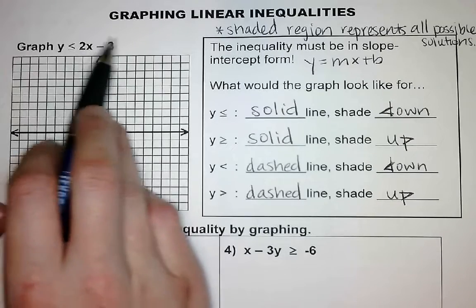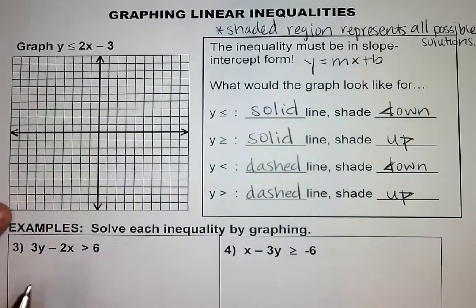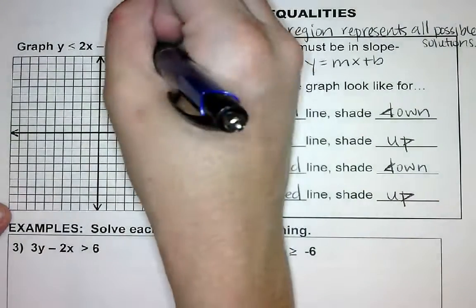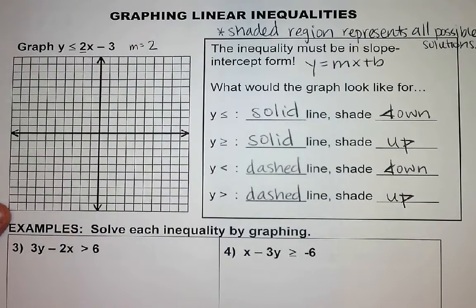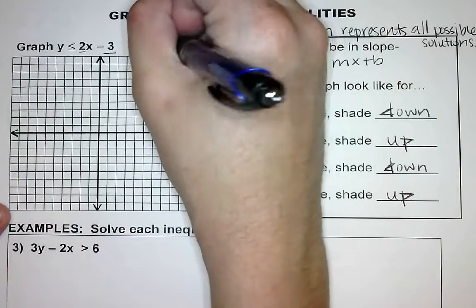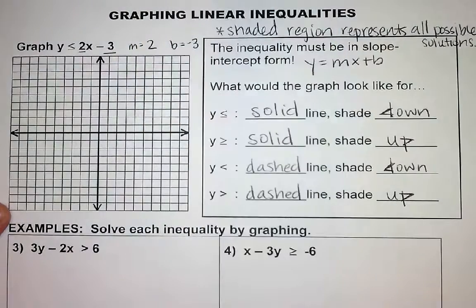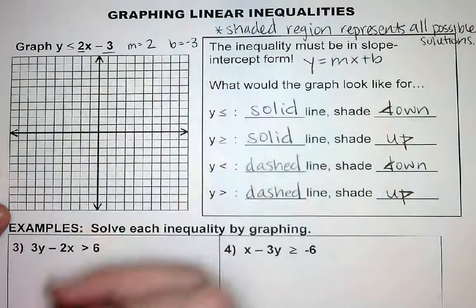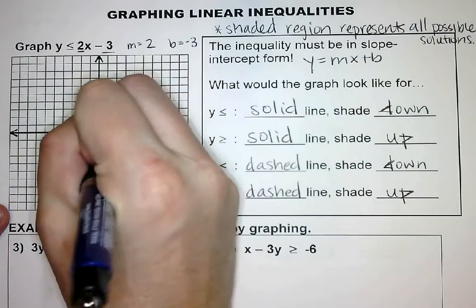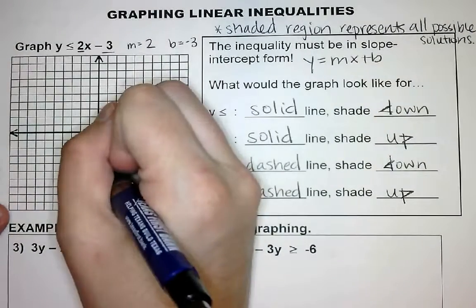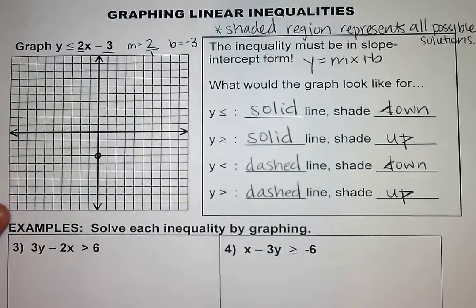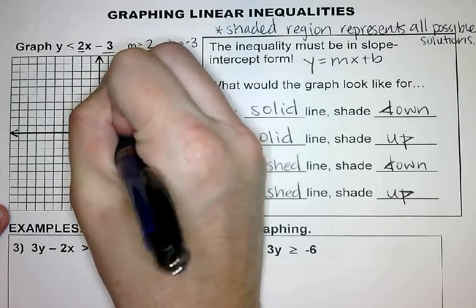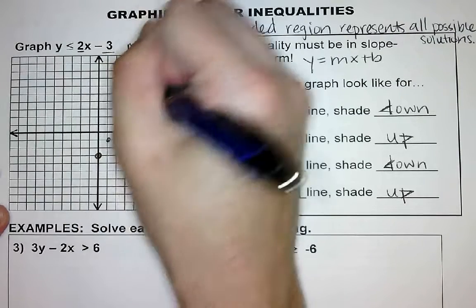We want to identify our slope and our y-intercept. What is my slope going to be? Two. And what is the y-intercept going to be? Negative three. So I'm going to start by graphing that point at negative three. My slope is two, which is really like two over one.